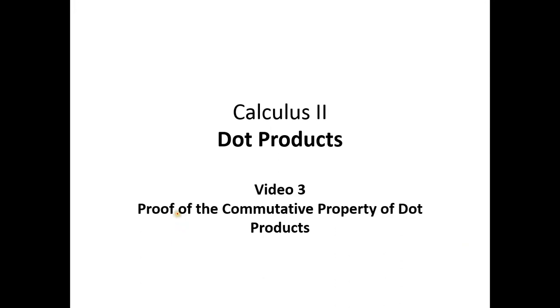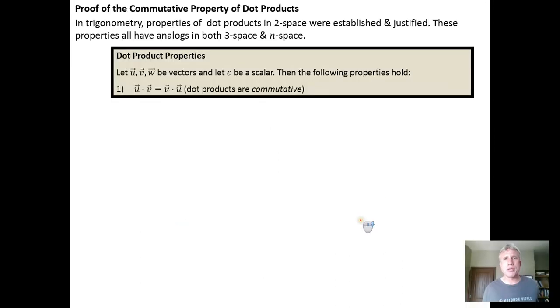So in this video we prove the commutative property for dot products. The commutative property says that if we have vectors u and v, that u dot v equals v dot u. In other words, the order in which we take the dot product doesn't matter.